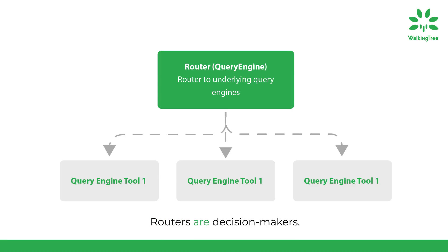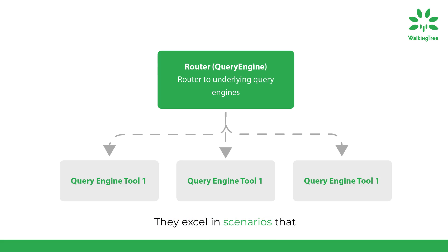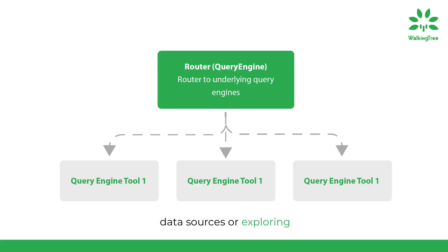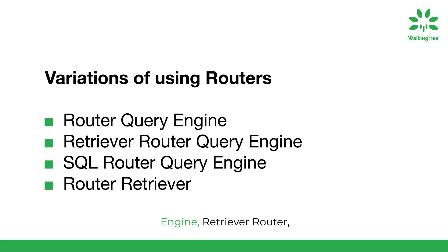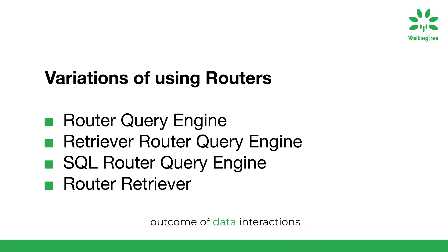Routers are decision makers. They take user queries and predefined choices, based on metadata to make selections using LLMs for decision making. They play a pivotal role in various use cases, excelling in scenarios that involve complex decisions, such as choosing from multiple data sources or exploring multiple choices simultaneously. Whether it's a router query engine, retriever router, SQL router, or router retriever, these modules play a vital role in steering the LlamaIndex process, making decisions that shape the outcome of data interactions.